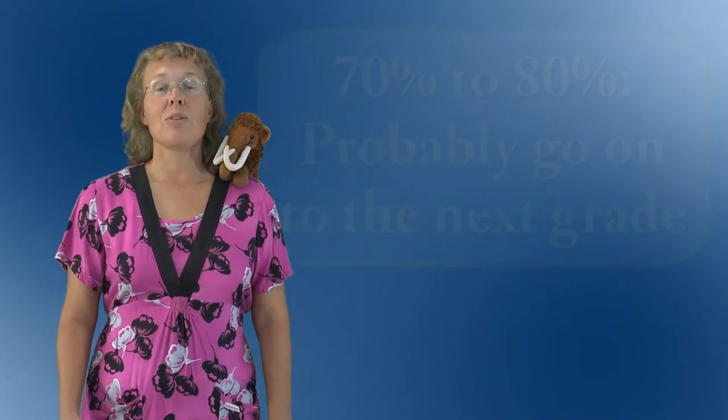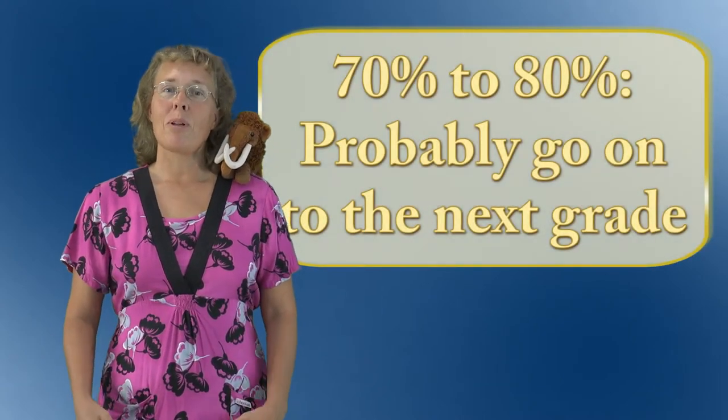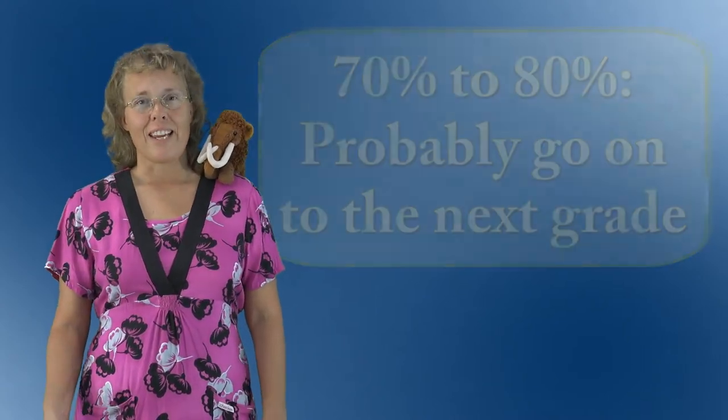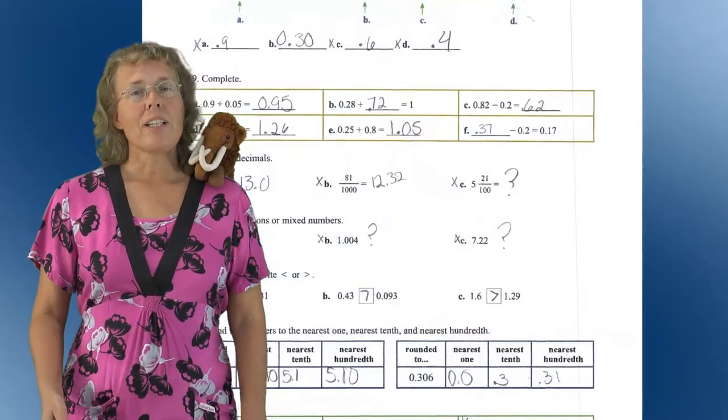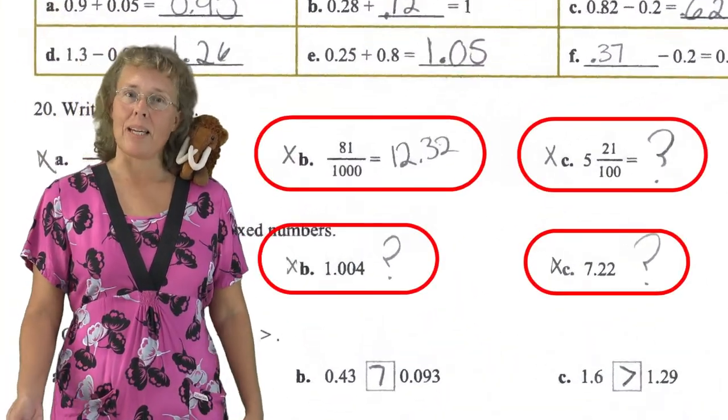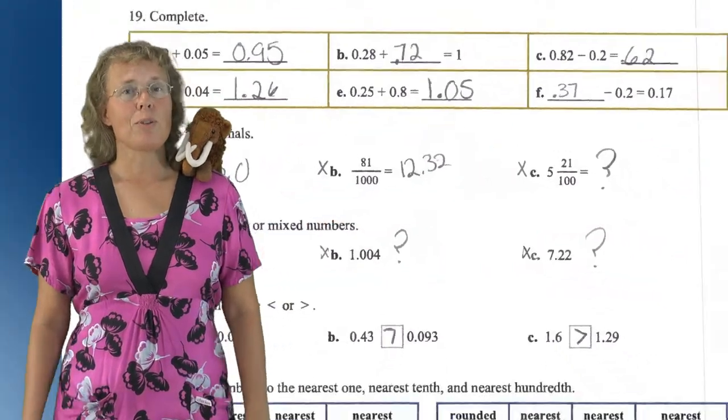Students scoring from 70 to 80% can probably also go on to the next grade. But you should check in what areas they didn't do well and what kind of mistakes they made and then possibly review pertinent areas. Use your judgment.